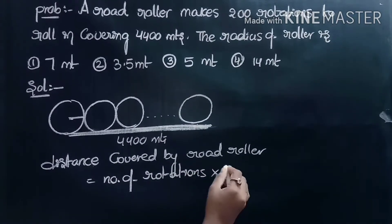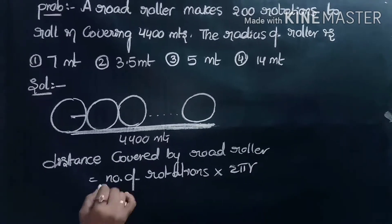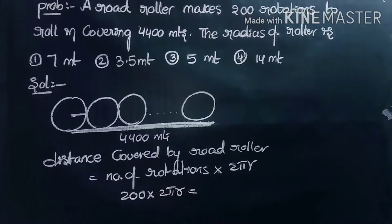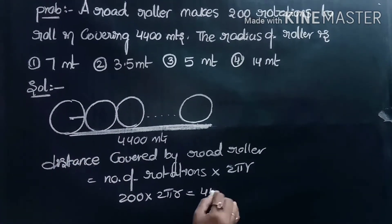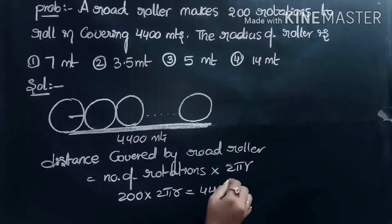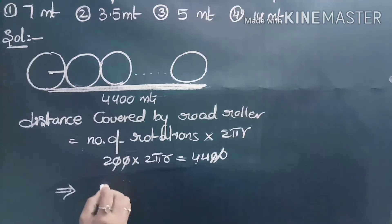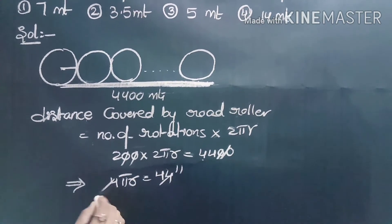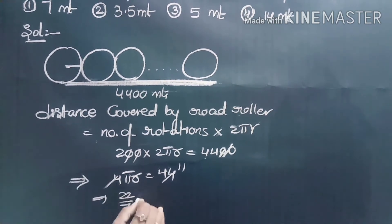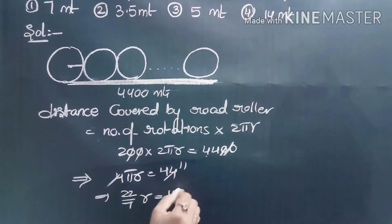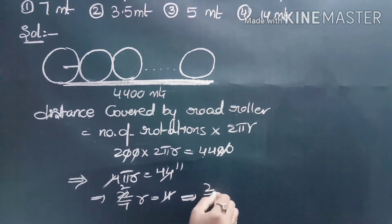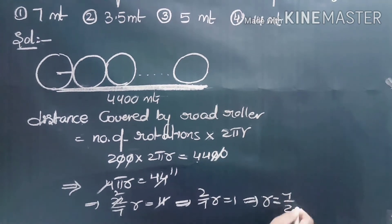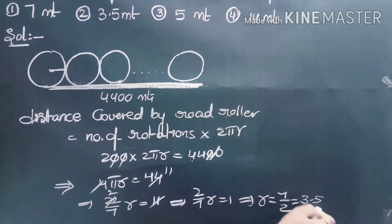Distance covered equals number of rotations into 2πr. Given rotations = 200, so 200 × 2πr = 4400. Simplifying, 4πr = 44, and this cancels 11 times. Using π = 22/7: (22/7) × r = 11. This cancels by 2, giving (2/7) × r = 1, so r = 7/2 = 3.5 meters. That is the second option.